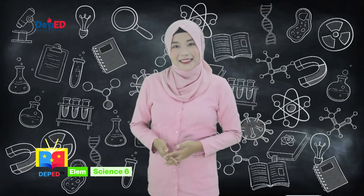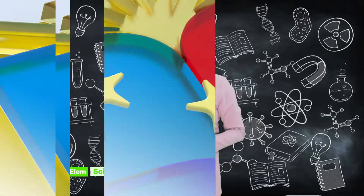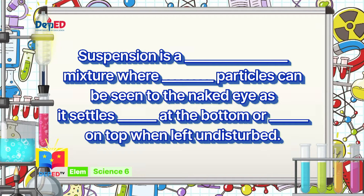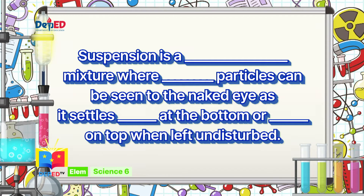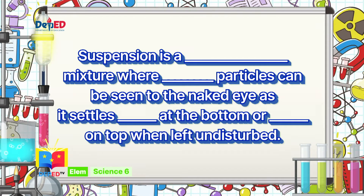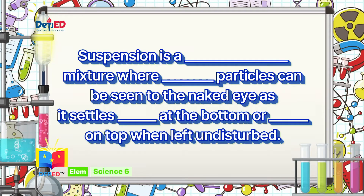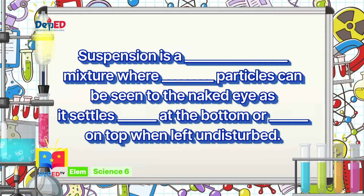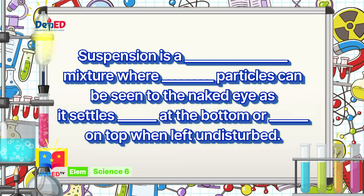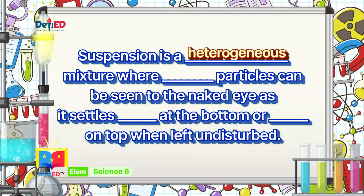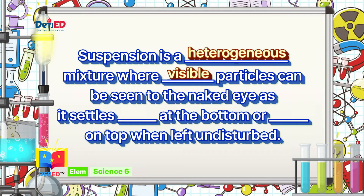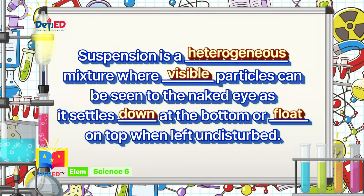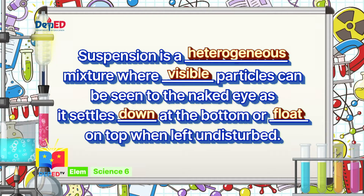Complete the statement. Do it on your paper. Suspension is a _____ mixture where _____ particles can be seen to the naked eye as it settles _____ at the bottom or _____ on top when left undisturbed. The answer: Suspension is a heterogeneous mixture where visible particles can be seen to the naked eye as it settles down at the bottom or floats on top when left undisturbed.